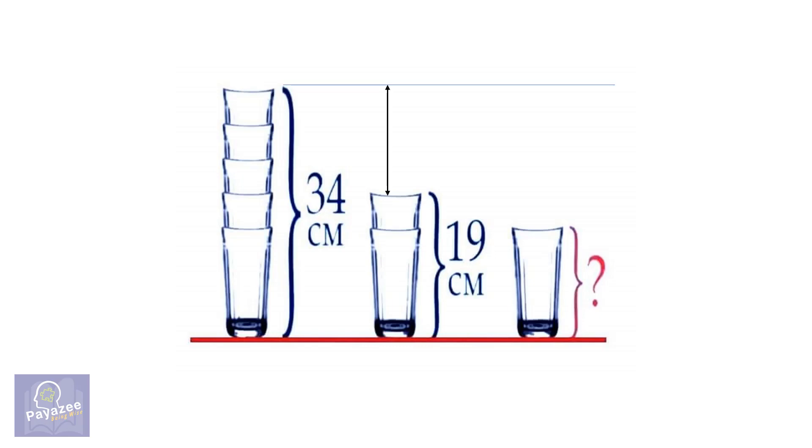Let's begin with the solution. The difference between stacks would be 34 minus 19, which equals 15. We have the visible part of 3 glasses, which is 15 divided by 3, that's 5 cm.